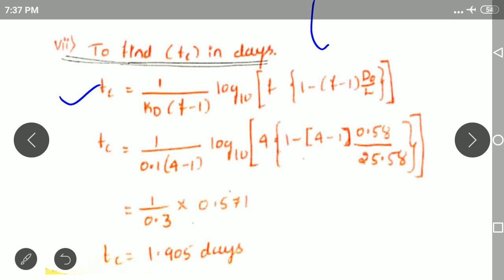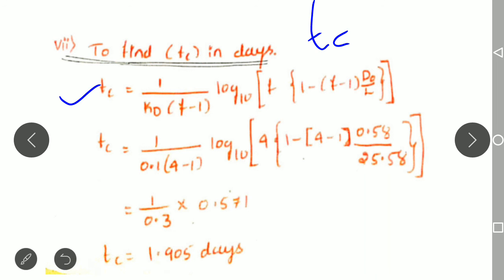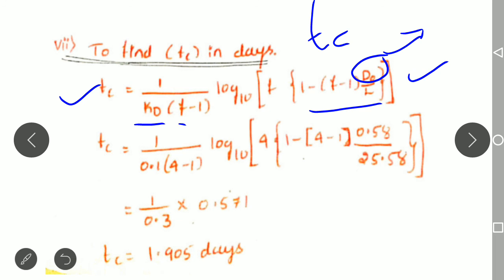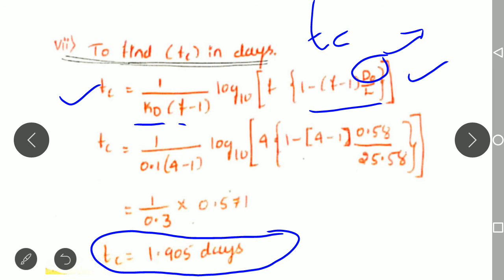To find when the critical DO deficient occurs, we use the standard formula for critical time tc: tc = (1 / kd(f−1)) × log base 10 of [f × (1 − (f−1) × D0 / L)]. Substituting all known values and simplifying, we obtain tc = 1.905 days. This means the critical DO deficiency will occur 1.905 days after the sewage is added.